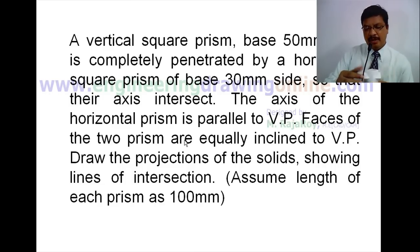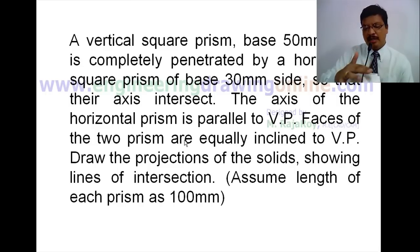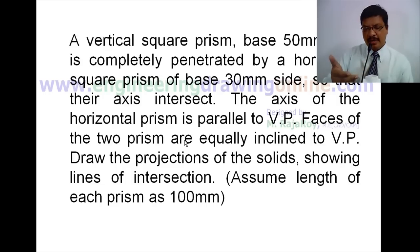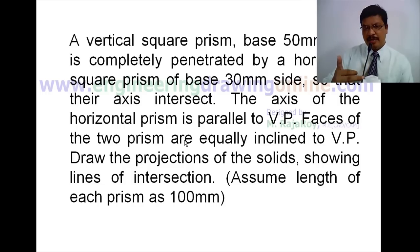The information given about inclination is that all the sides of both prisms are equally inclined to VP. This means we have to consider the inclination of both the vertical square prism and the horizontal square prism as 45 degrees.